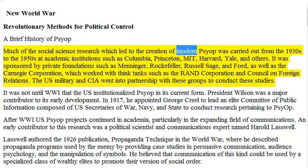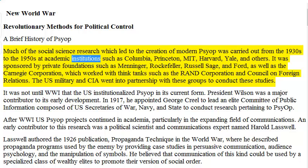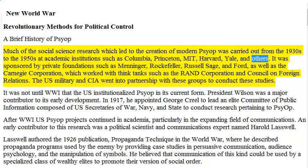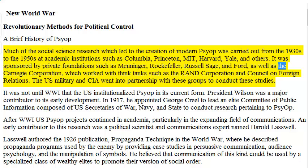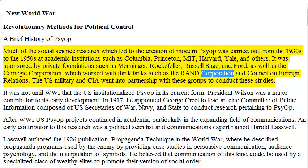These institutions included Columbia, Princeton, MIT, Harvard, Yale, and others. Research was sponsored by private foundations such as Menninger, Rockefeller, Russell Sage, and Ford, as well as the Carnegie Corporation, which worked with think tanks such as the RAND Corporation and Council on Foreign Relations.